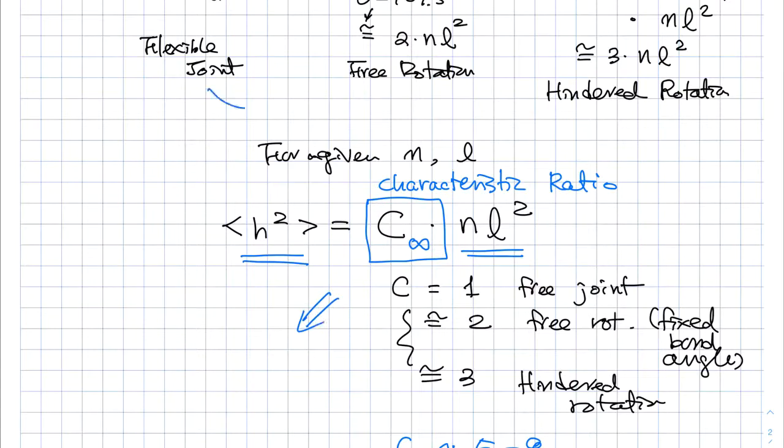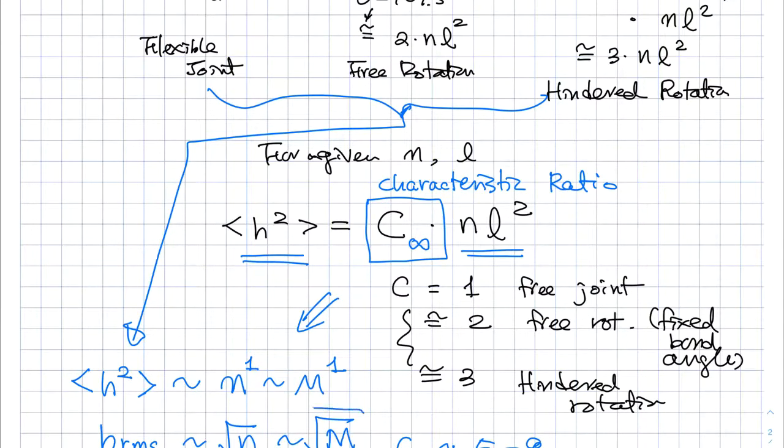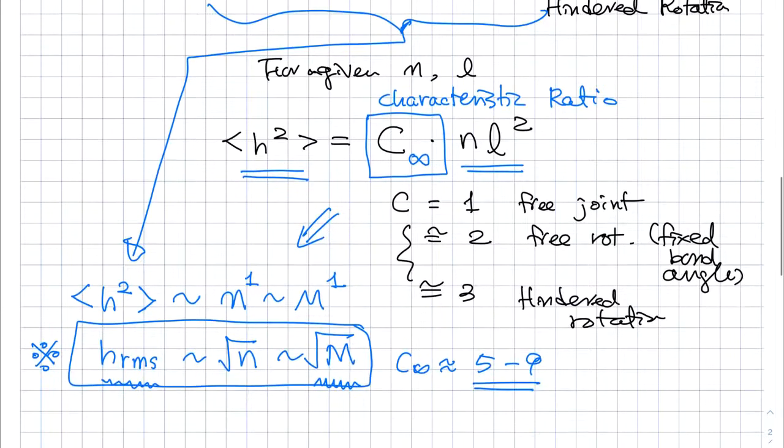From all these three different cases, whether the more you are being more realistic from flexible joint to free rotation, from free rotation to the hindered rotation, what is being maintained here is size square is proportional to n to the first power, which is a molecular weight to the first power. In other words, root mean square value is square root to the n square root to the molecular weight. So as long as you maintain this relationship, we have a pretty good idea about the size of the polymer chain is not linearly, but proportional to the square value to the molecular weight. And that scaling loss still holds true. So it's m to the 0.5, that's the scaling low power.